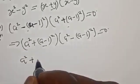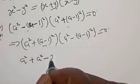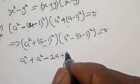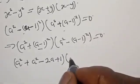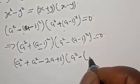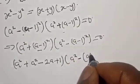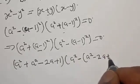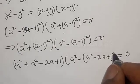Substituting, A minus 1 squared equals A squared minus 2A plus 1. So the second factor gives A squared minus 2A plus 1 equal to 0.